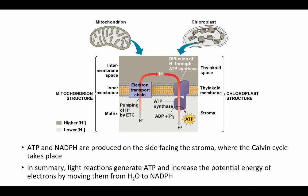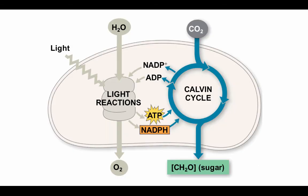In chloroplasts, the ATP and NADPH are produced on the side facing the stroma — which is also where the Calvin cycle takes place. In summary, the light reactions generate ATP and increase the potential energy of electrons by moving them from water to NADPH using light energy. These two products are then deposited in the stroma, where the Calvin cycle will take them up. We will see how that works in the next web lecture.